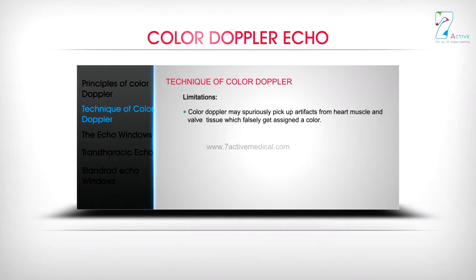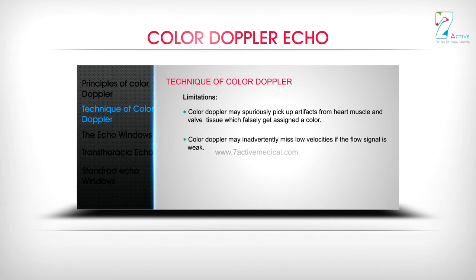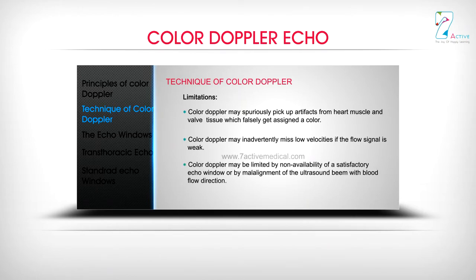Color Doppler may spuriously pick up artifacts from heart muscle and valve tissue, which falsely get assigned a color. It may inadvertently miss low velocities if the flow signal is weak. Color Doppler may also be limited by non-availability of a satisfactory echo window or by mal-alignment of the ultrasound beam with blood flow direction.